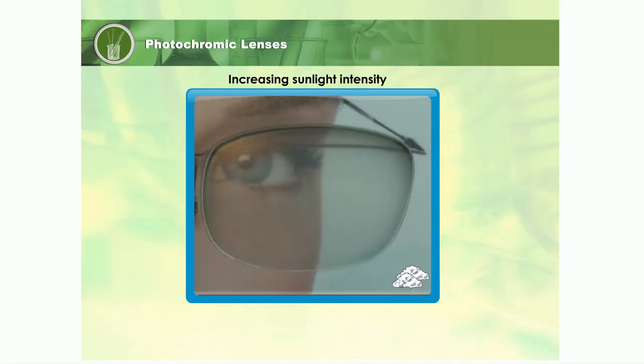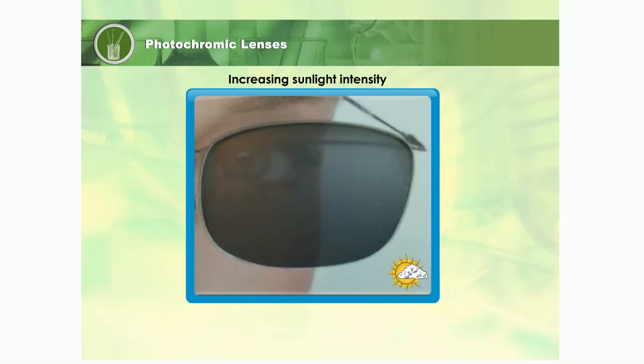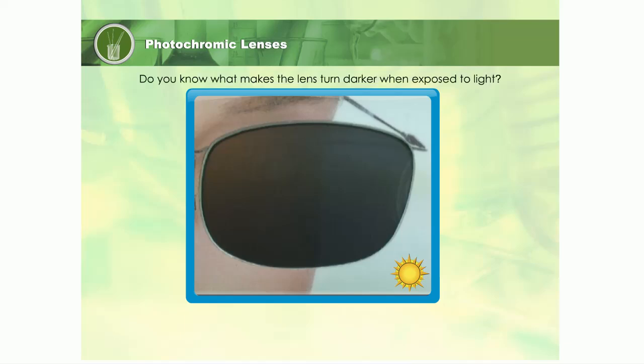The picture shows a photochromic lens under different intensities of light. The lens turns darker as the intensity of light increases. Do you know what makes the lens turn darker when exposed to light?